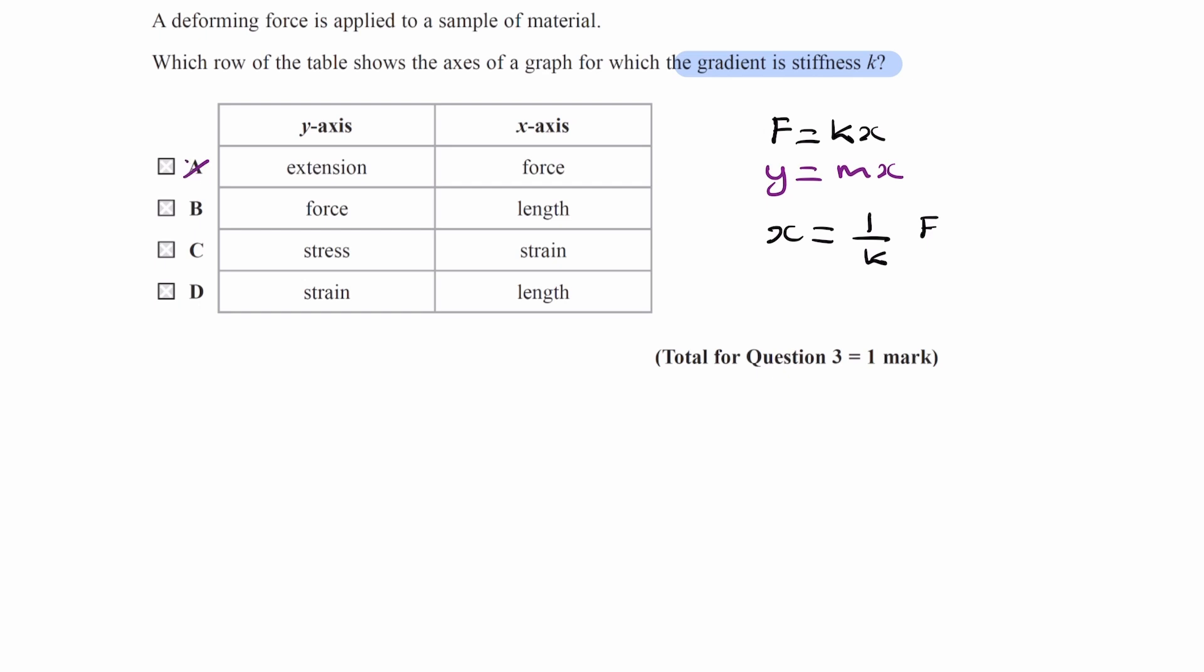Let's go back to option B. For option B, we have force against length. The length of the string equals the original length plus the extension. We know that F = kx, so then F = k(L - L₀), rearranging the equation for x and subbing that value in.